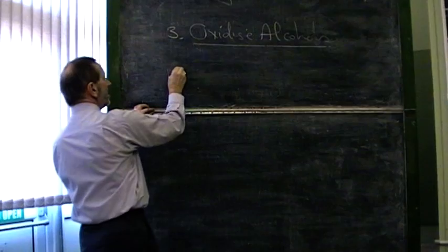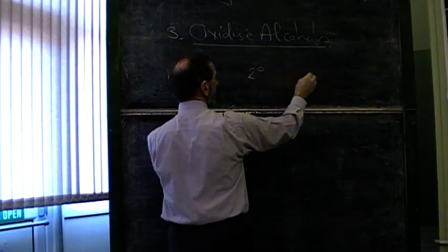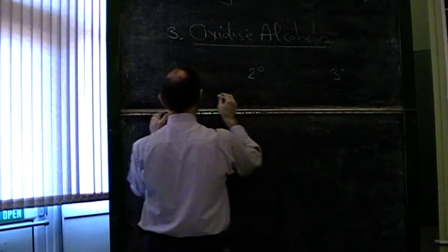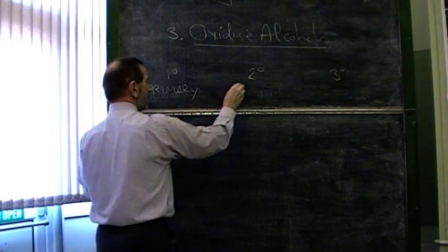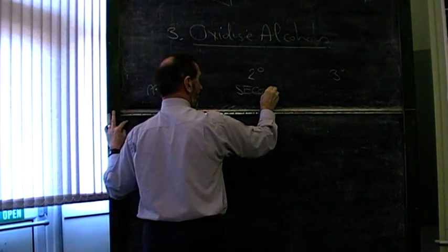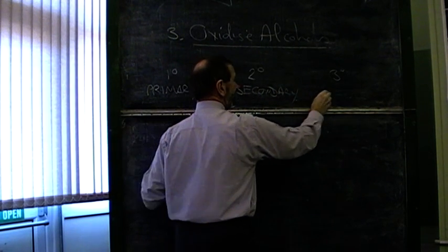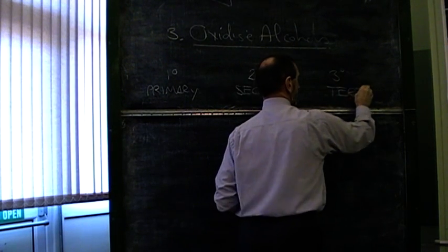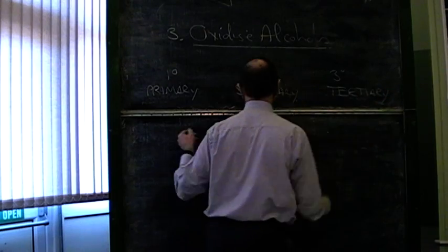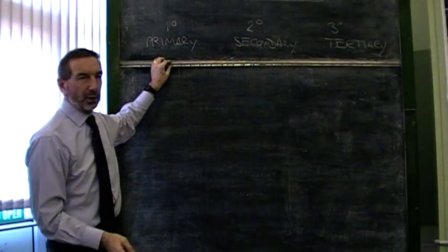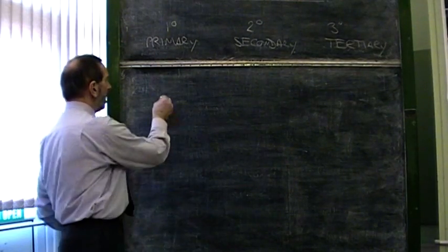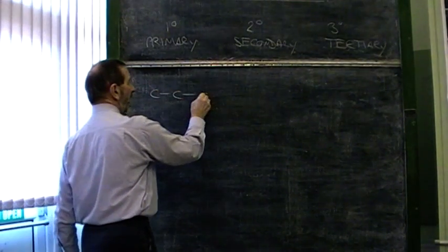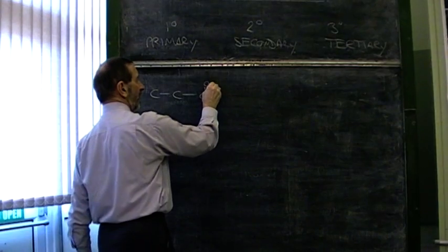We have primary, secondary and tertiary alcohol. Primary, secondary and tertiary. What distinguishes those? Well, the answer is, it's the position of the hydroxyl group. In a primary alcohol, the hydroxyl group is on the end of the chain.